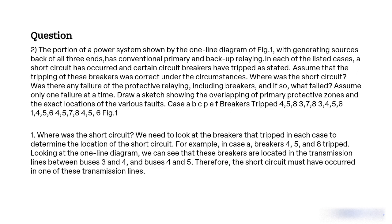Question 1: Where was the short circuit? We need to look at the breakers that tripped in each case to determine the location of the short circuit. In this case, breakers 4, 5, and 8 tripped. Looking at the 1-line diagram, we can see that these breakers are located in the transmission lines between buses 3 and 4, and buses 4 and 5. Therefore, the short circuit must have occurred in one of these transmission lines.